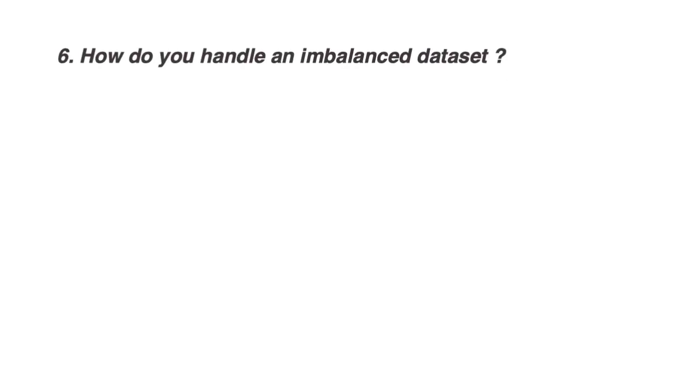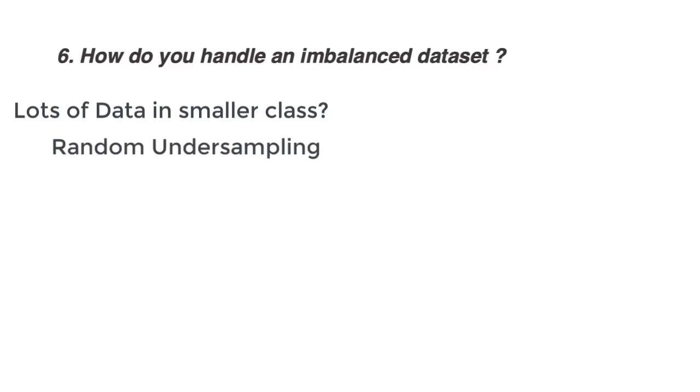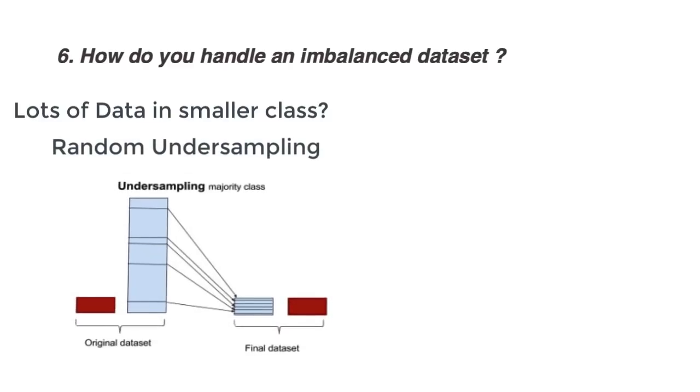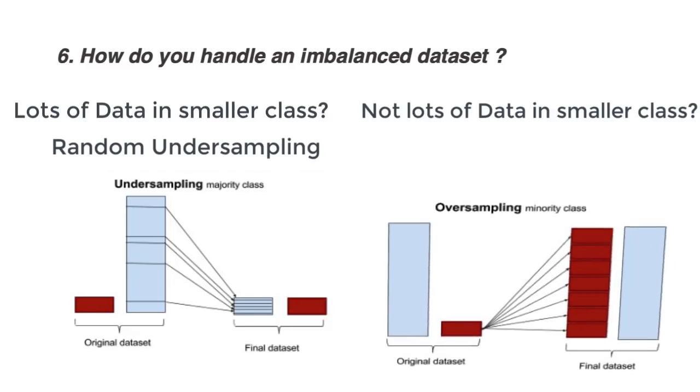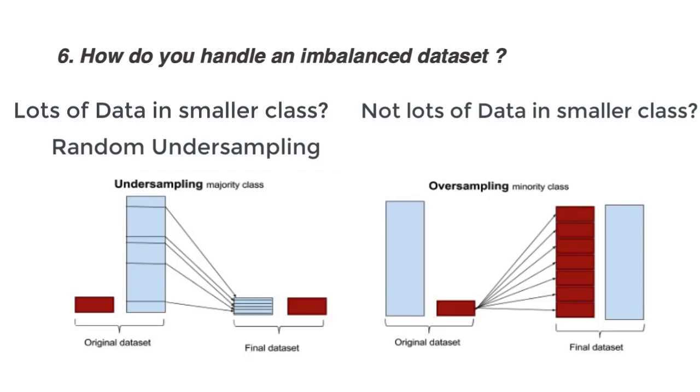How would you handle an imbalanced dataset? If you have a lot of data to work with in the underrepresented class, then we can try random undersampling. This involves getting rid of the overrepresented class samples from the training data. You don't have to target a perfect 1 to 1 ratio, but something close should work just fine. If you don't have too much data to work with, we can perform random oversampling. Take the underrepresented class, and sample with replacement until we get the required ratio. Synthetic minority oversampling, or SMOTE, is a technique where we can synthesize new data with minor distortions of existing samples, rather than just copies.